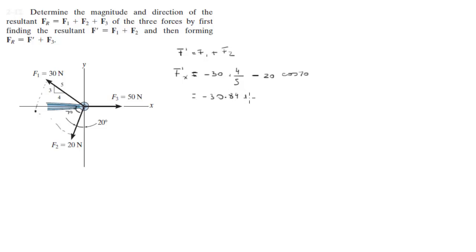This will give you negative 30.84 Newtons. Remember to always use your units. Now we're going to do the same thing but for the Y. We know that F1 is going in the positive Y direction, so it's 30 times 3 over 5 minus 20 sine of 70. This is equal to negative 0.794.